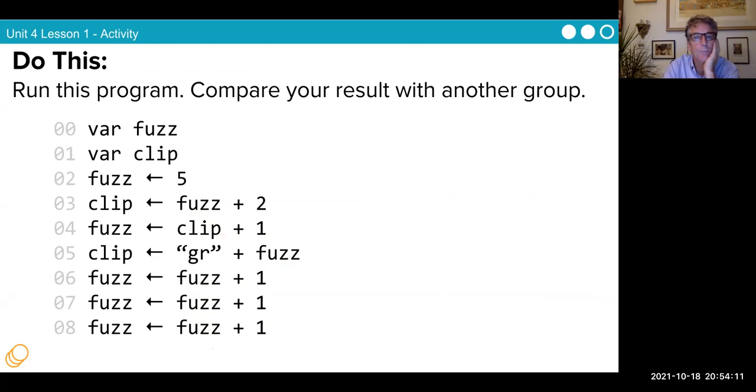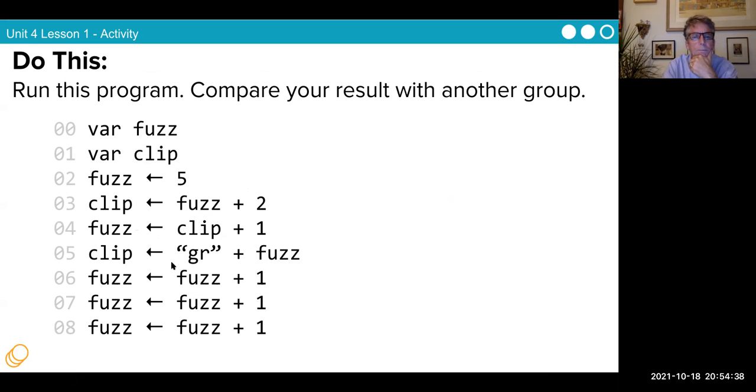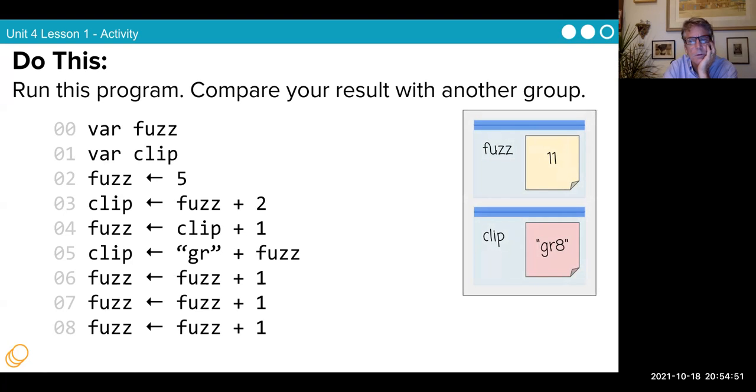Run this program. Compare your results with another group. Create the variable 'fuzz'. Create the variable 'clip'. Fuzz gets five. Clip gets fuzz plus two. Fuzz gets clip plus one. Clip gets 'gr' plus fuzz. Fuzz gets fuzz plus one. Fuzz gets fuzz plus one. Fuzz gets fuzz plus one. What is this thing doing? Let's take a look. You get fuzz 11 and 'great'.